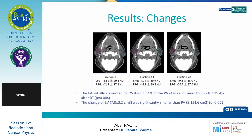They found changes in the volume of the parotids. On average, fat initially accounted for 25.9% — with some standard deviation — of the physical volume of the parotid glands, and it raised to 30.2% after radiotherapy. The change in effective volume was significantly smaller than the physical volume.